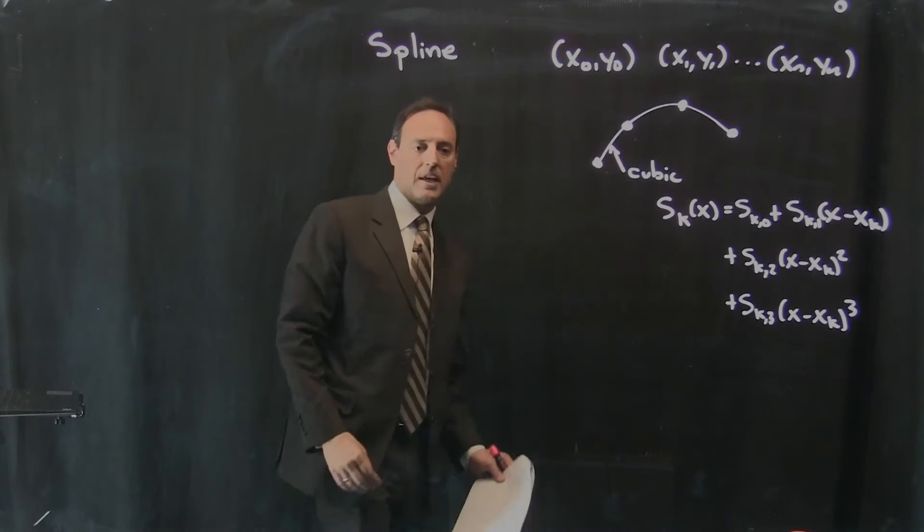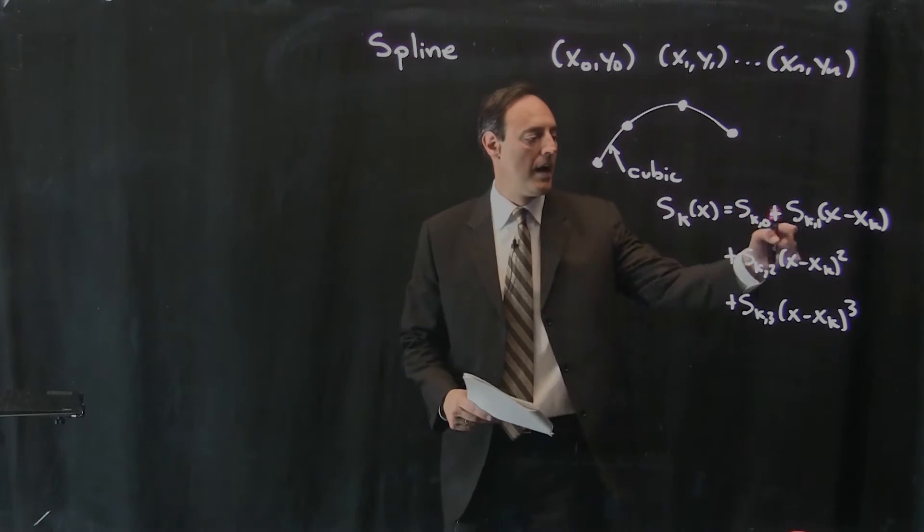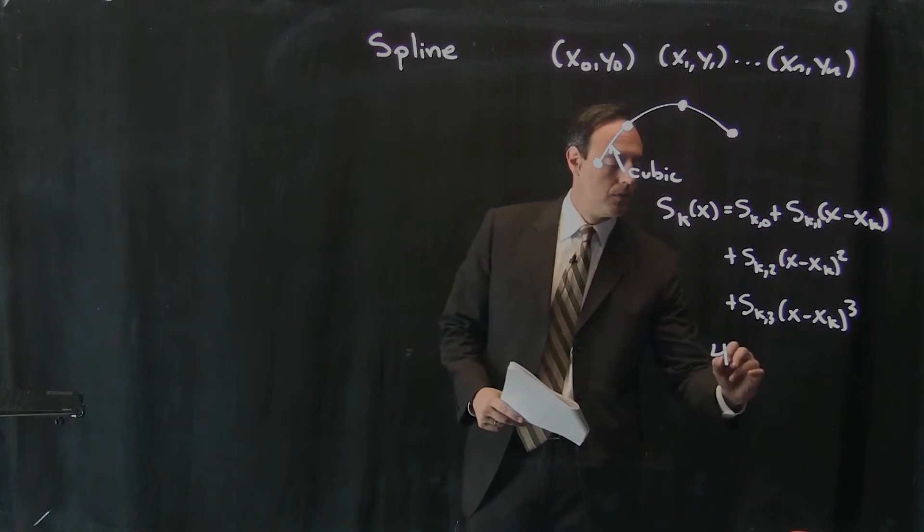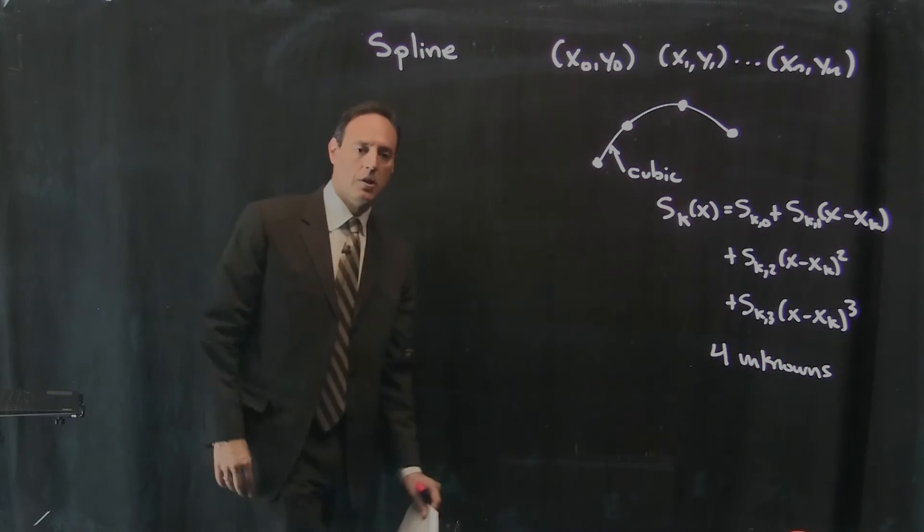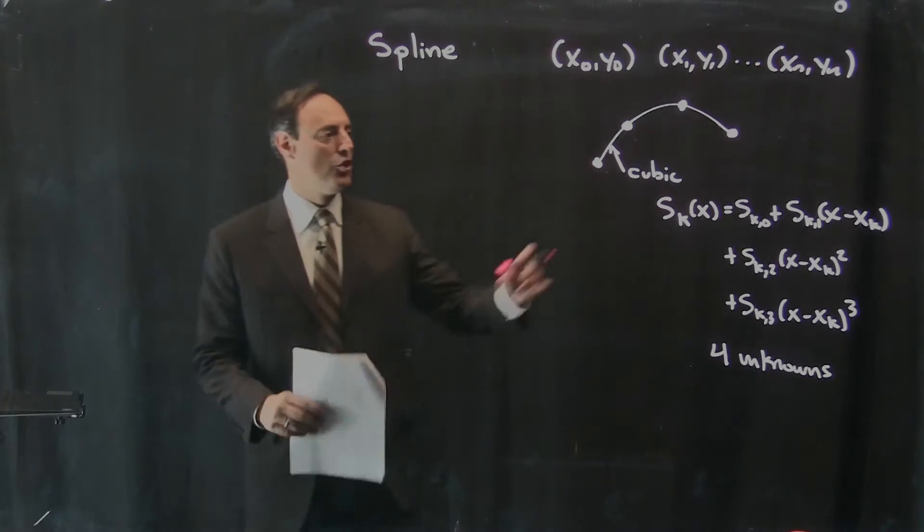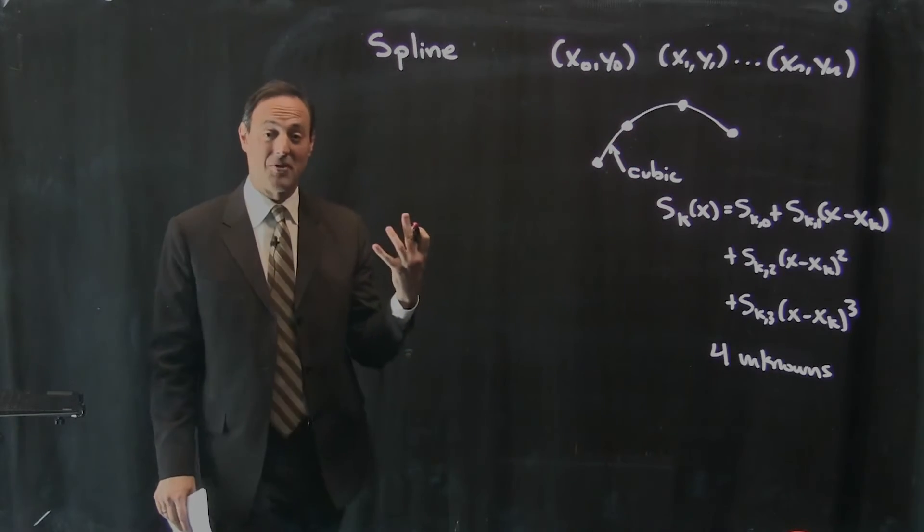Okay? So it's got a linear term, quadratic, and a cubic term. And notice, for a cubic, I have four unknowns. Okay? So each one of these little cubic pieces, four things I don't know that I've got to determine.